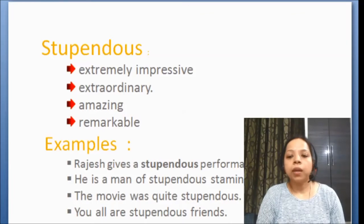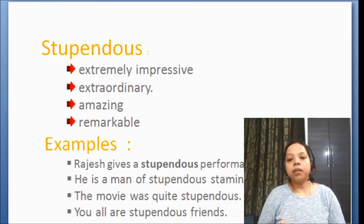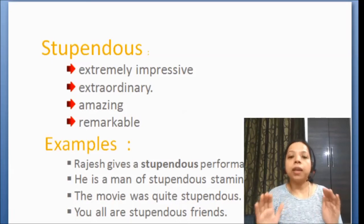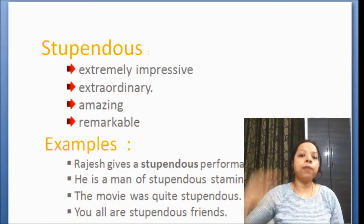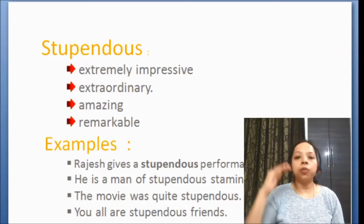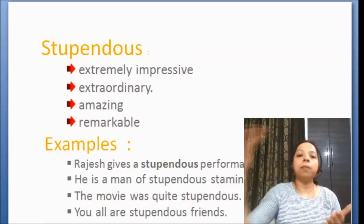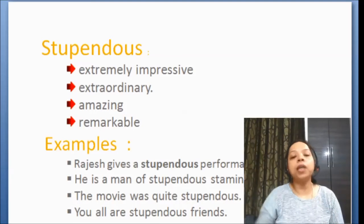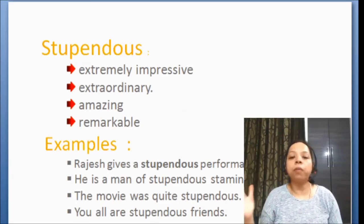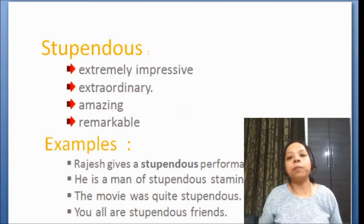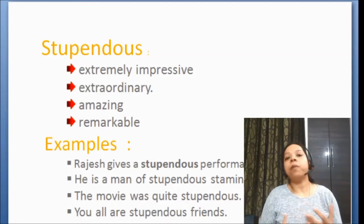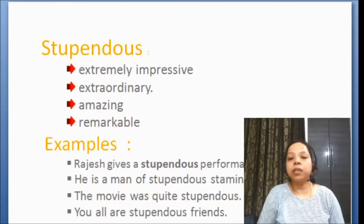For example: 'Rajesh gives a stupendous performance in the race' — ki Rajesh ne race mein jo apni performance dhi, woh above average, above top thi. Unexpectedly brilliant performance usne dhi. So, Rajesh gives a stupendous performance in the race.